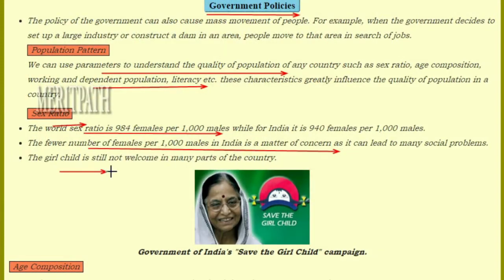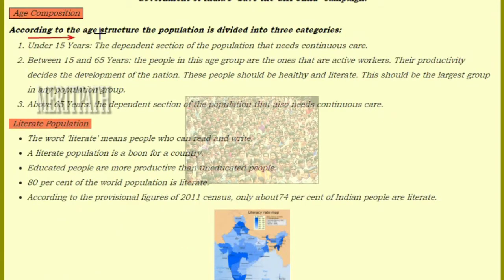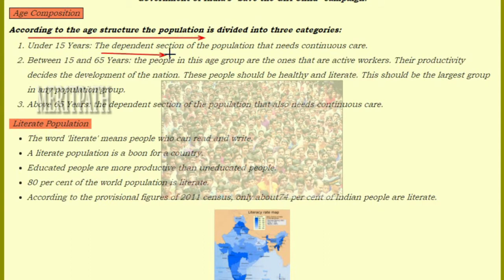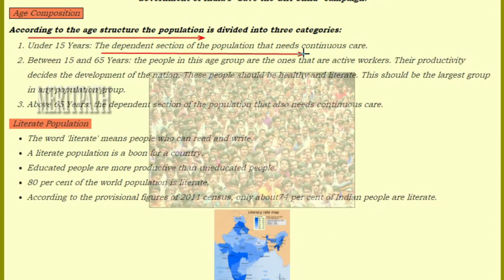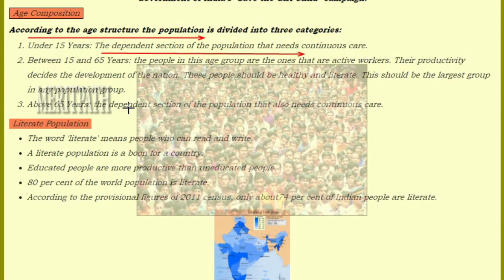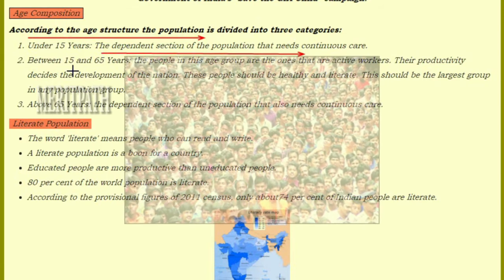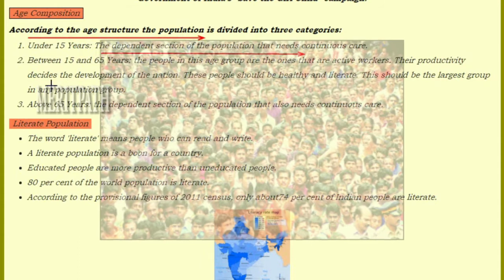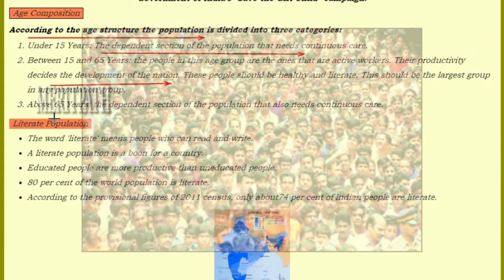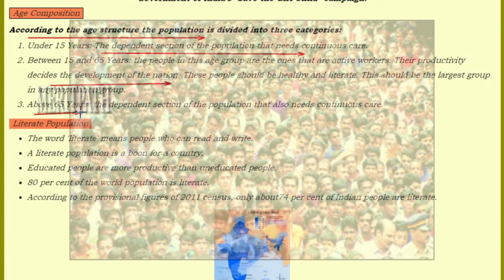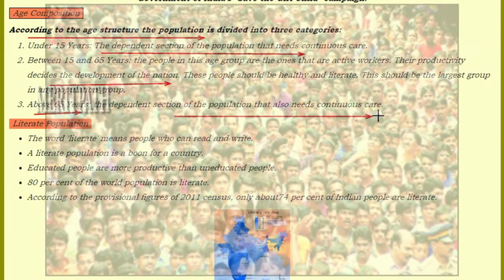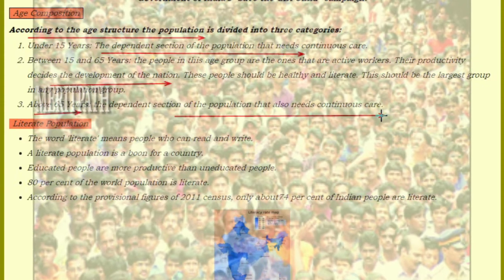Age Composition: According to the age structure, population is divided into three categories. Under 15 years — the dependent section of the population that needs continuous care. Between 15 to 65 years — in this age group, the ones are active workers who productively decide the development of the nation. And people above 65 years — also a dependent section of the population who need continuous care.